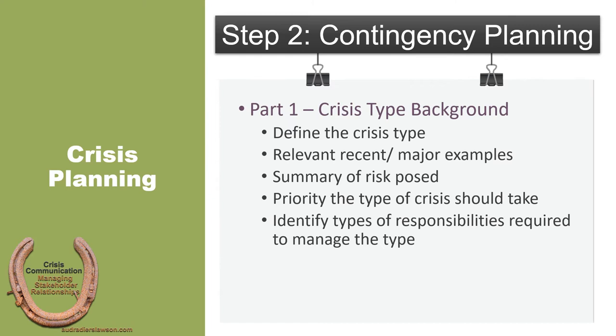Within contingency planning, there are eight parts. In part one, there should be a very brief and high-level summary of the type of crisis so that people who are not crisis experts can understand what's at stake. That should include, all relative to the organization or industry: a clear definition of the crisis type, relevant recent major examples of the crisis type, a summary of the risk or threat posed by the type of crisis, the priority this kind of crisis should take, and identifying the types of responsibilities the organization has in managing this type of crisis — for example, material crisis response, internal stakeholder management, and external stakeholder management.